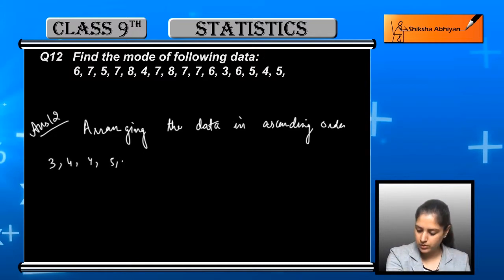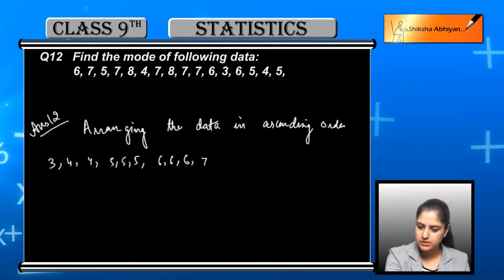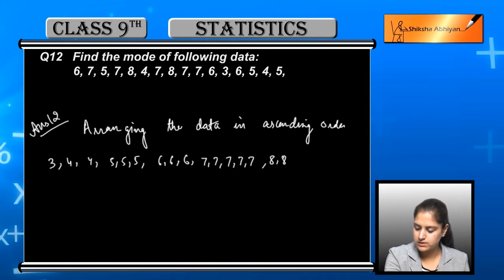Arranging the data in ascending order, we will get 3, 4, 4, 5, 5, 5, 6, 6, 6, 7, 7, 7, 7, 8, 8. These are the observations arranged in ascending order.